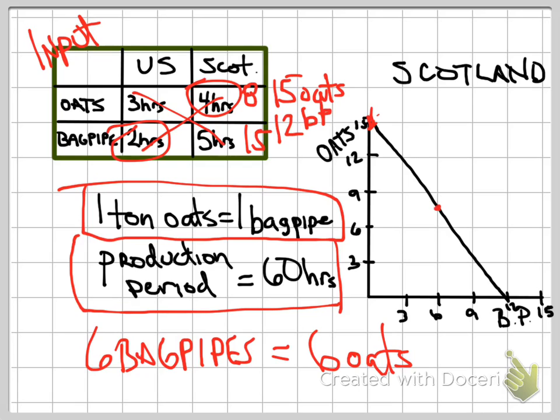When we looked at the original problem, it said that Scotland was sitting at a point where, without trade, they were right at the middle of their PPC. But with this new trading relationship, with specialization, they actually create what's called a new CPC — a consumption possibilities curve. In absolute terms, if they had specialized in oats, that would be 15 tons. But if they technically continued to specialize in oats and traded all of them, they could get 15 bagpipes. So it creates a new CPC for Scotland.